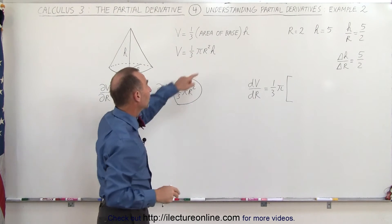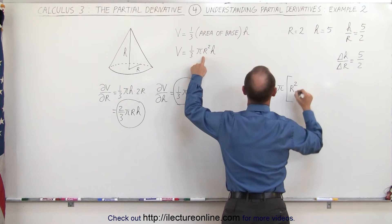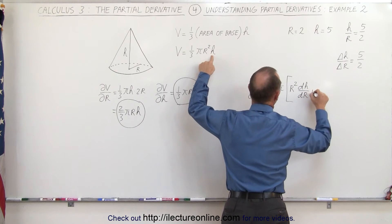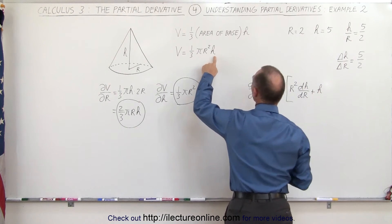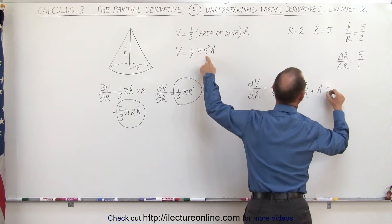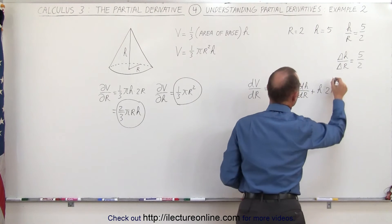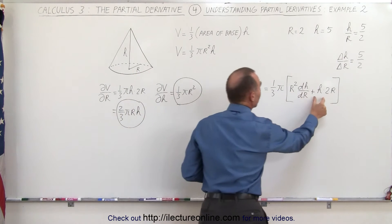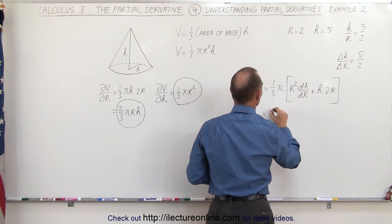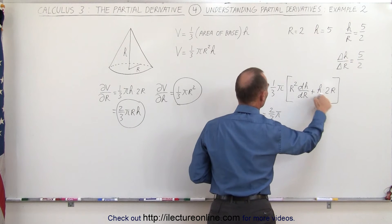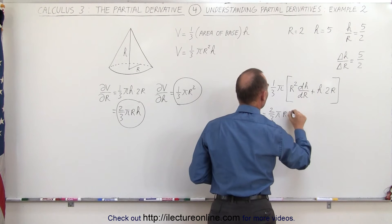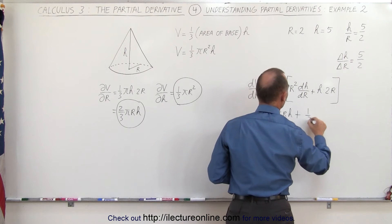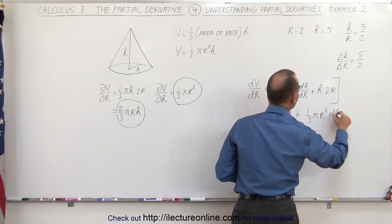We use the product rule. We take the first term, r squared, times the derivative of h with respect to r — that would be dh/dr — plus the second term, h, times the derivative of the first, which is 2r times dr/dr. Rearranging, this equals two-thirds pi times r times h, plus one-third pi r squared times dh/dr.